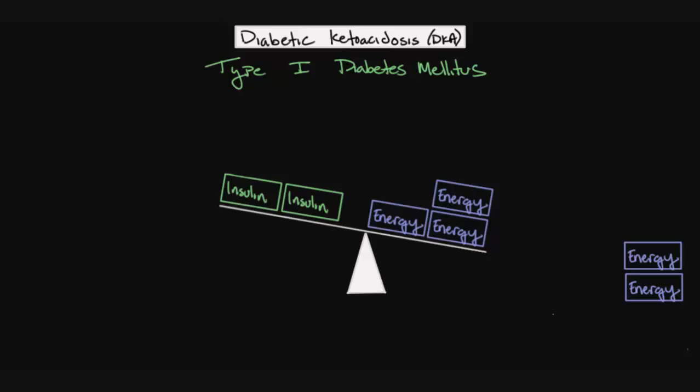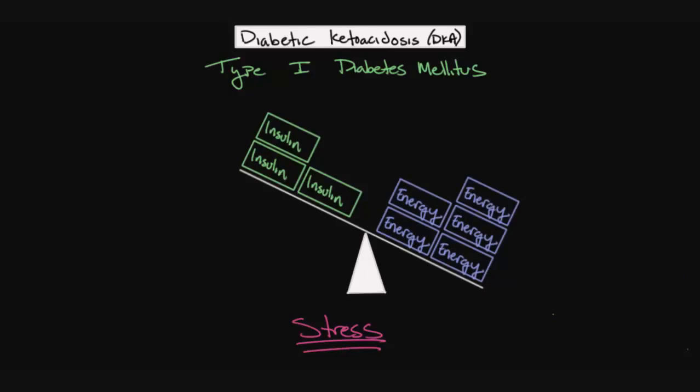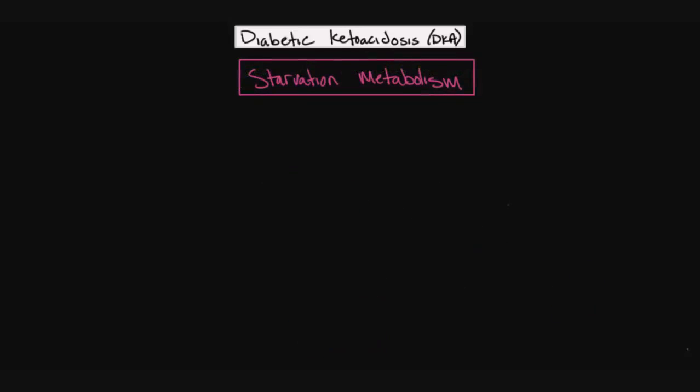But what happens if the body is placed in a state of stress, such as with an infection? Now, these stress situations require a tremendous amount of energy, and the balance ends up getting tipped to a point where the body is far from being able to compensate. And this is the situation in which diabetic ketoacidosis occurs. And when this happens, metabolically speaking, the body goes into a starvation state.